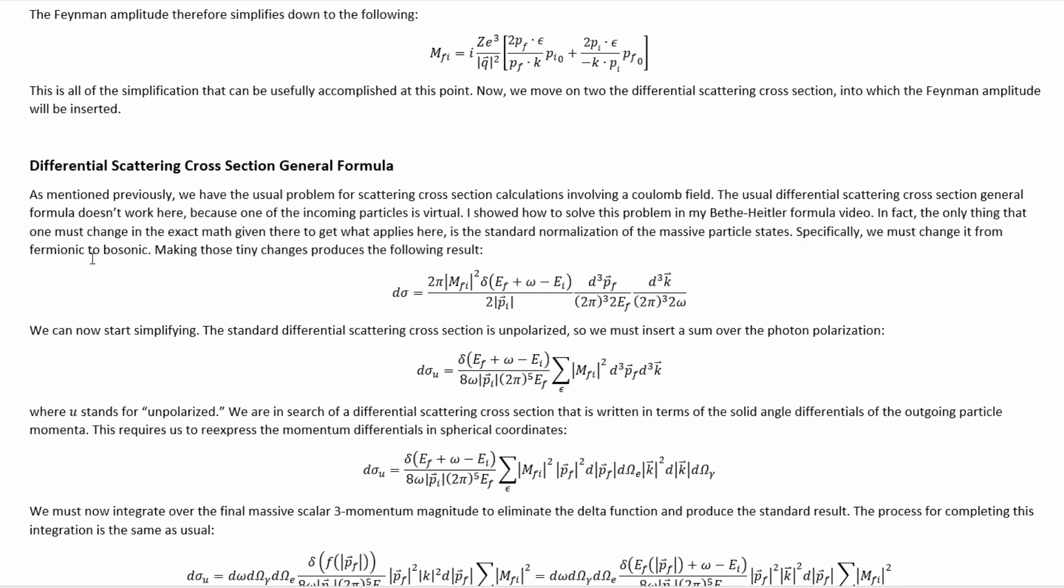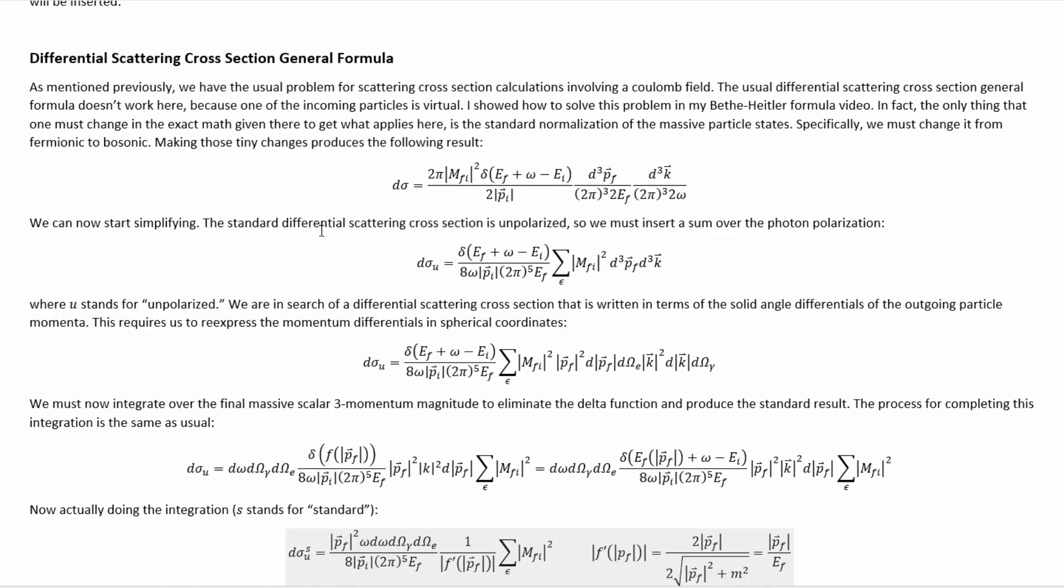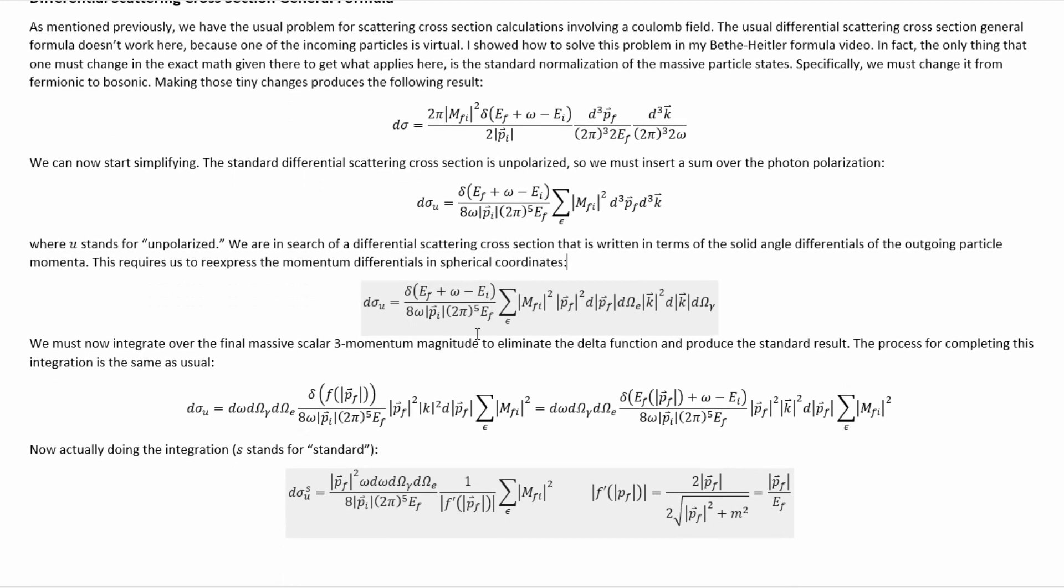Specifically, we must change it from fermionic to bosonic. Making those tiny changes produces this result. The standard differential scattering cross-section is unpolarized, so we must insert a sum over the photon polarization, which gets us to this. Where U stands for unpolarized, we are in search of a differential scattering cross-section that is written in terms of the solid angle differential of the outgoing particle momenta. This requires us to re-express the momentum differentials in spherical coordinates getting us to here.